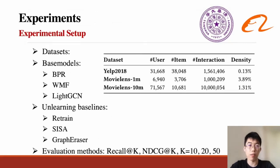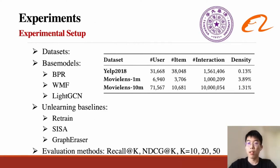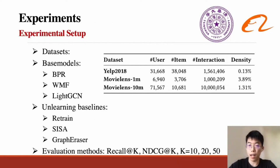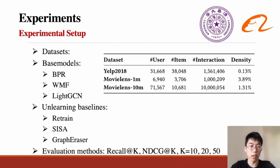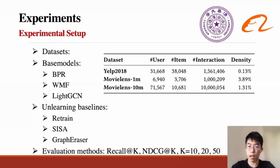In our experiments, we use three public datasets: EAP, MovieLens 1 million, and MovieLens 10 million. We compare with state-of-the-art machine unlearning methods on different recommendation models. The compared recommendation models include BPR, WMF, and LightGCN. The compared unlearning methods include RETRAIN, CESA, and GRAPH Eraser. Recommendation performance is evaluated by Recall and NDCG.